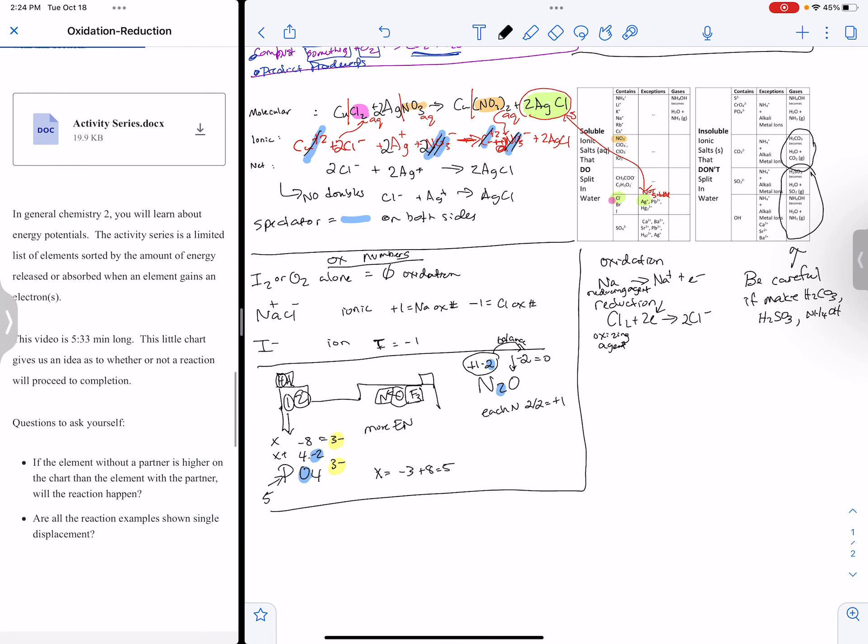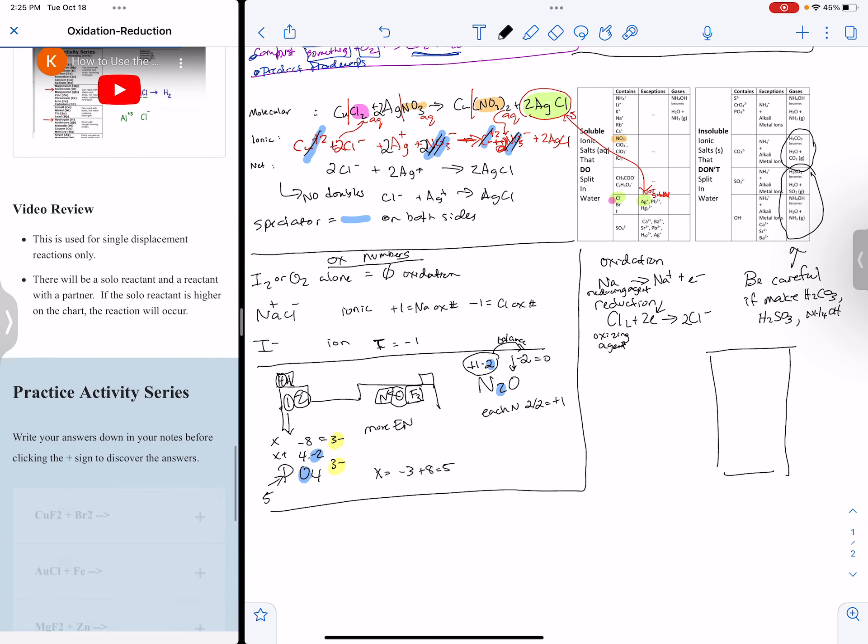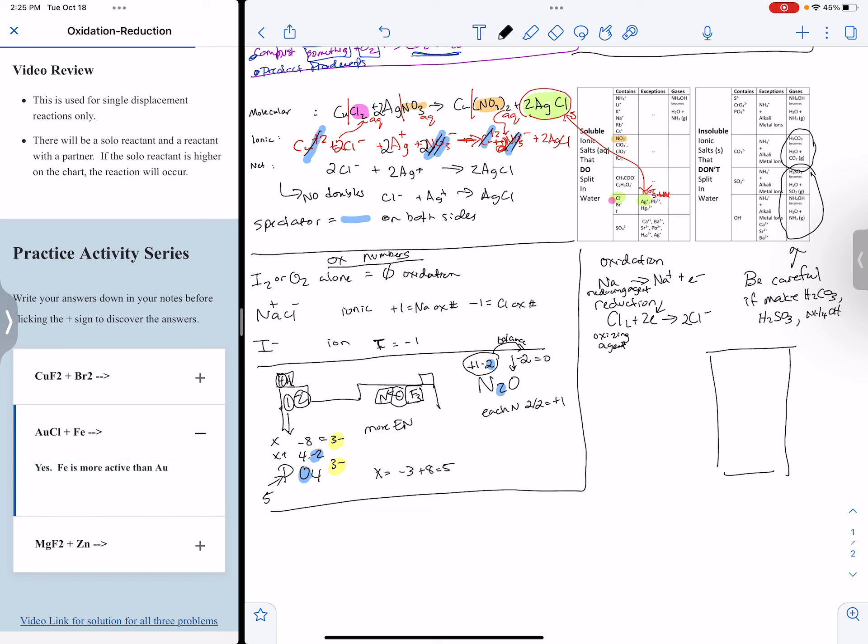If I wasn't sure, I might write a few more examples down. And there's an activity series right there. I didn't include it in this list, but it would have been a good idea to have had an activity series list on there. It's for single displacements only. So it's AuCl plus Fe. It's the solo one that we're trying to figure out. If the solo one, if this is higher, the reaction will go. Somewhere on the chart, Fe was higher than Au.